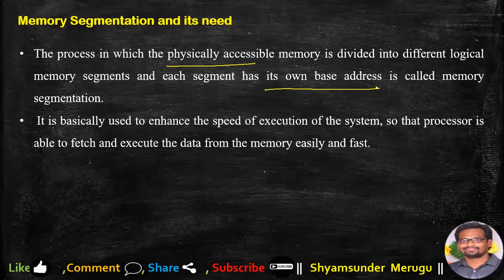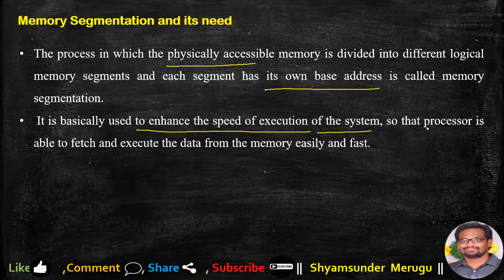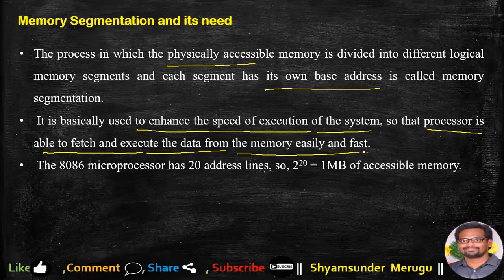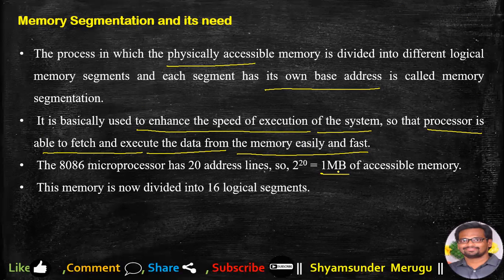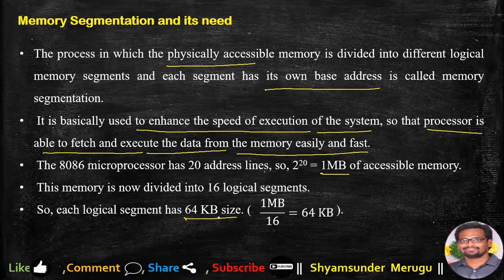The basic need for memory segmentation is to enhance the speed of execution of the system, so that the processor is able to fetch and execute data from memory easily and fast. The 8086 microprocessor has 20 address lines, so 2 raised to the power 20 gives us 1 MB of accessible memory. This memory is divided into 16 logical segments, each of size 64 KB — that is, 1 MB divided by 16 logical segments equals 64 KB per segment.